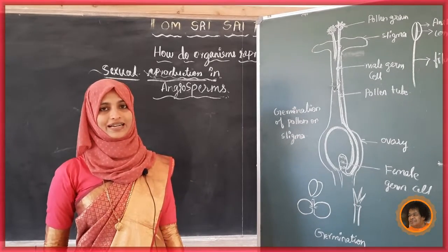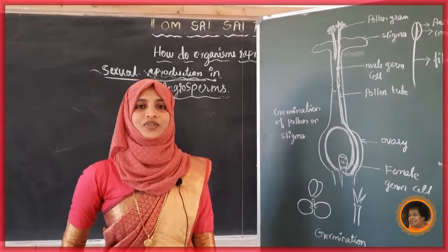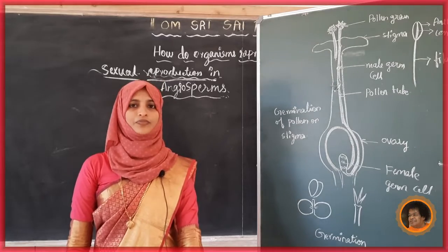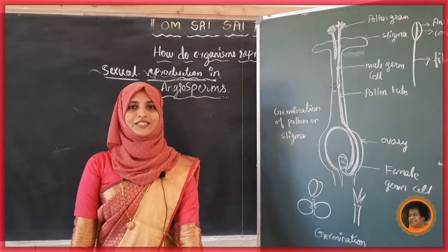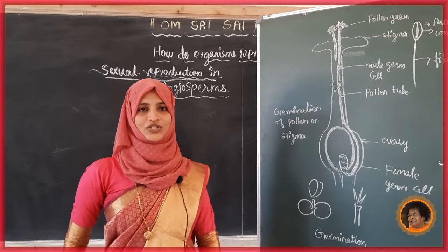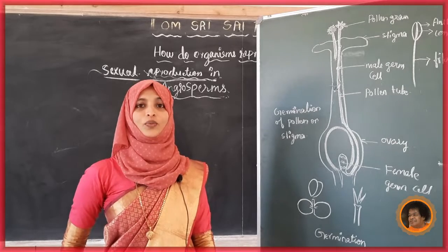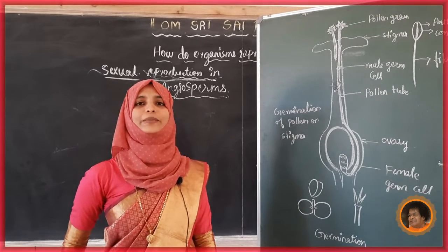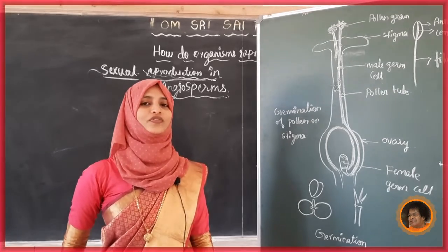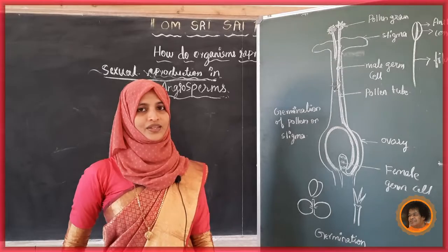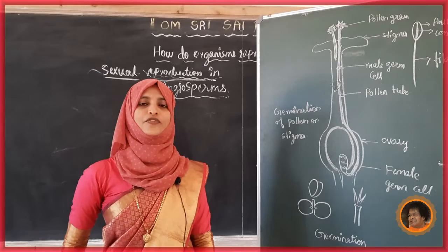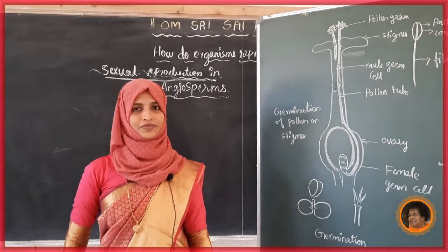Draw a neat diagram and study. Write down these questions: Draw a neat labeled diagram of a typical flower. Which are the male and female gametes in a flower? Differentiate unisexual and bisexual flowers. Differentiate self-pollination and cross-pollination. Thank you, students.